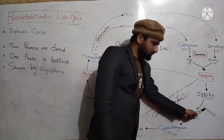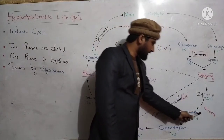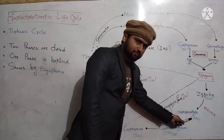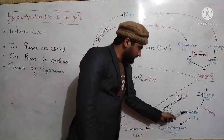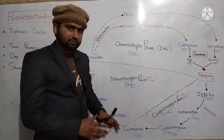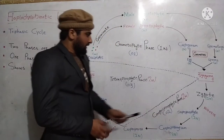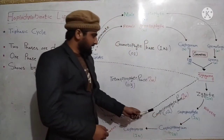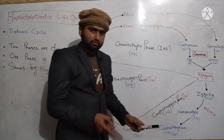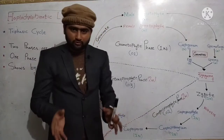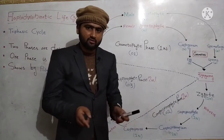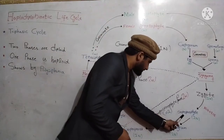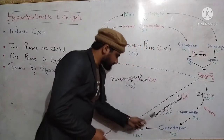The zygote undergoes repeated mitosis and converts into a new structure called carposporophyte. The function of carposporophyte is to produce carpospores. Carposporophyte is a diploid structure, and carpospores are produced in carposporangium.